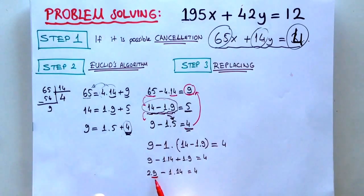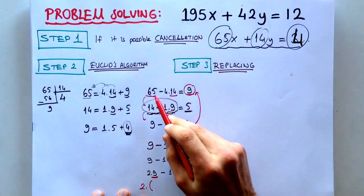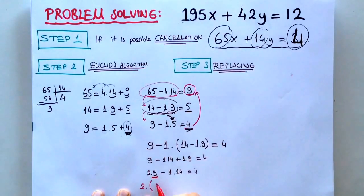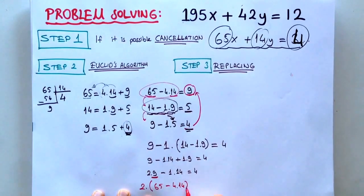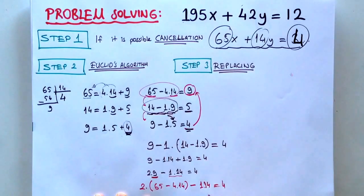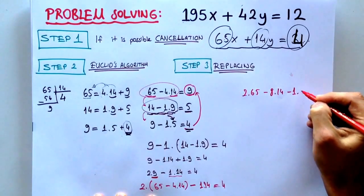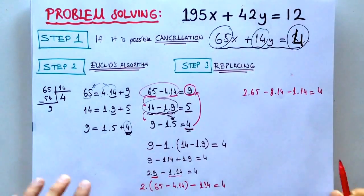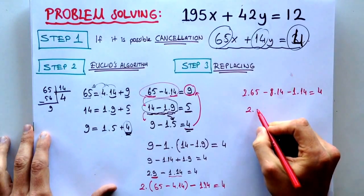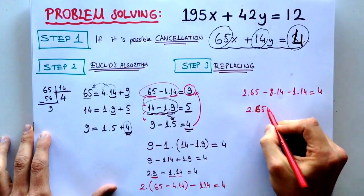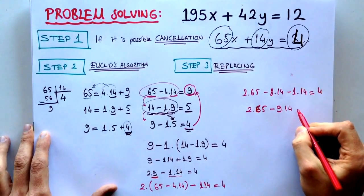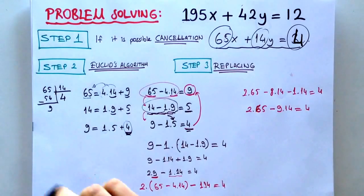So, we will write this equation again. 2 times with 65 and this one. 65 minus 4 times 14 minus 1 times 14. There is already 1 times 14, is equal to 4. If we arrange them, 2 times 65 minus 8 times 14 minus 1 times 14 is equal to 4. If we arrange them again,